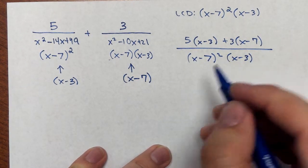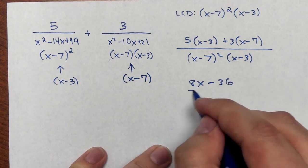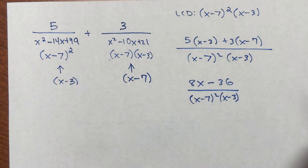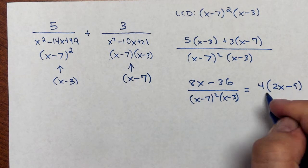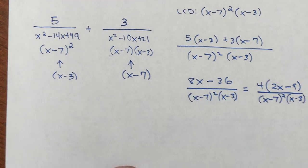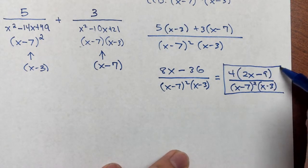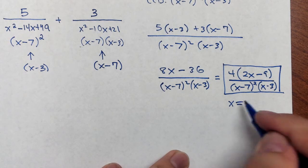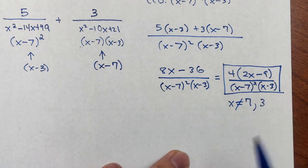Multiplying out the numerator, I get 8x − 36 over (x−7)²(x−3). I can factor that numerator by taking out a 4, leaving 4(2x−9), which doesn't cancel anything — but factoring it is often very useful. This is the simplest version of this expression. Restrictions: x cannot be 7, since (x−7)² would be 0, and x cannot be 3, since (x−3) would be 0. Hopefully this has been helpful.